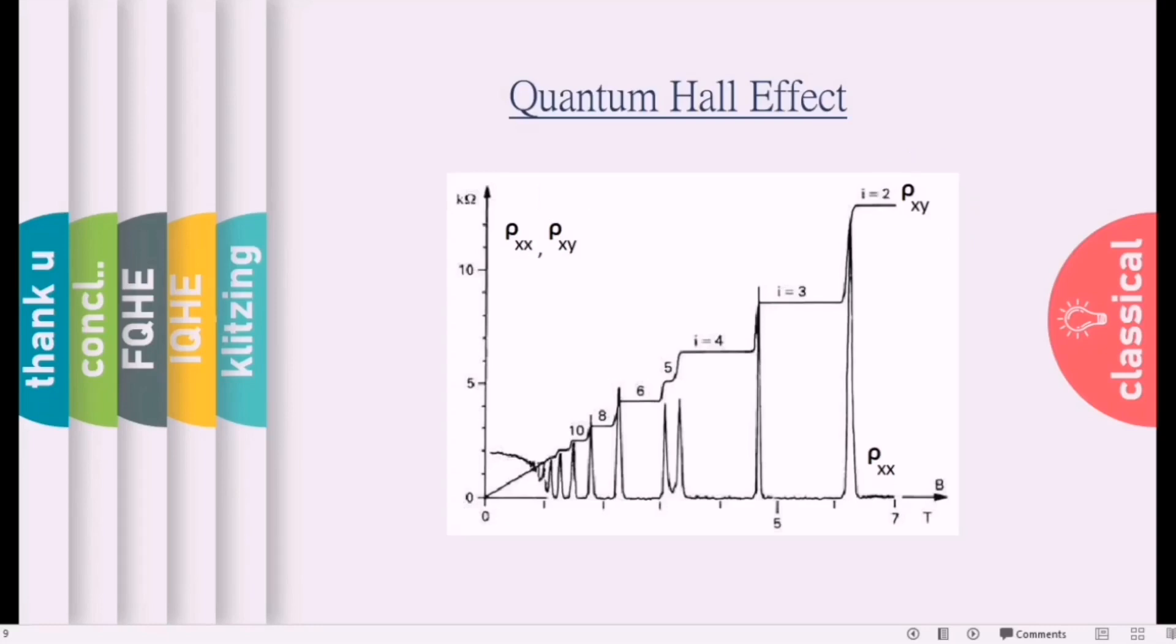For the plot, X axis is magnetic field and Y axis is resistivity. Resistivity means there can be ρxx and ρxy. ρxx is longitudinal resistivity and ρxy is Hall resistance or transverse resistivity. The plateaus are seen for the Hall resistance plot, for ρxy.